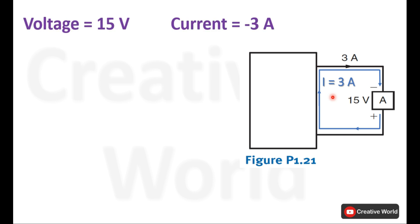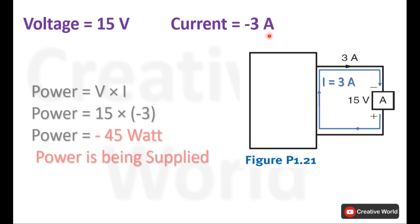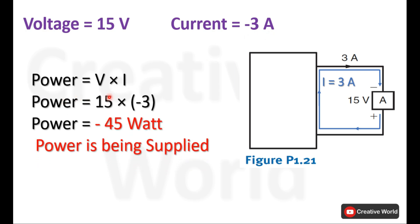So in our case the voltage will be 15V and current is taken as minus 3A. Using the electrical power formula, voltage multiplied by minus 3A gives minus 45W.